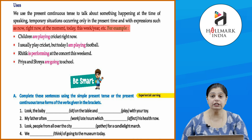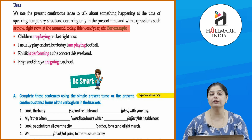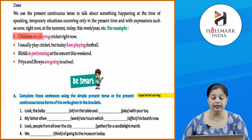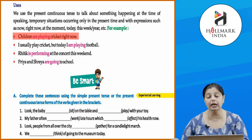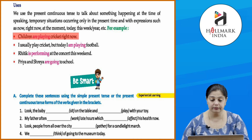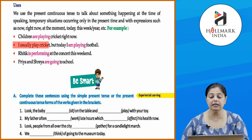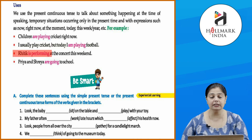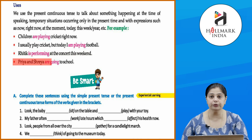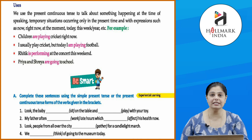The present continuous tense is used when an action is happening at the very time we are speaking. For example: 'Children are playing cricket right now' — their action of playing cricket is continuous. 'I usually play cricket but today I am playing football.' 'Hritik is performing at the concert this weekend.' 'Priya and Shreya are going to school.'